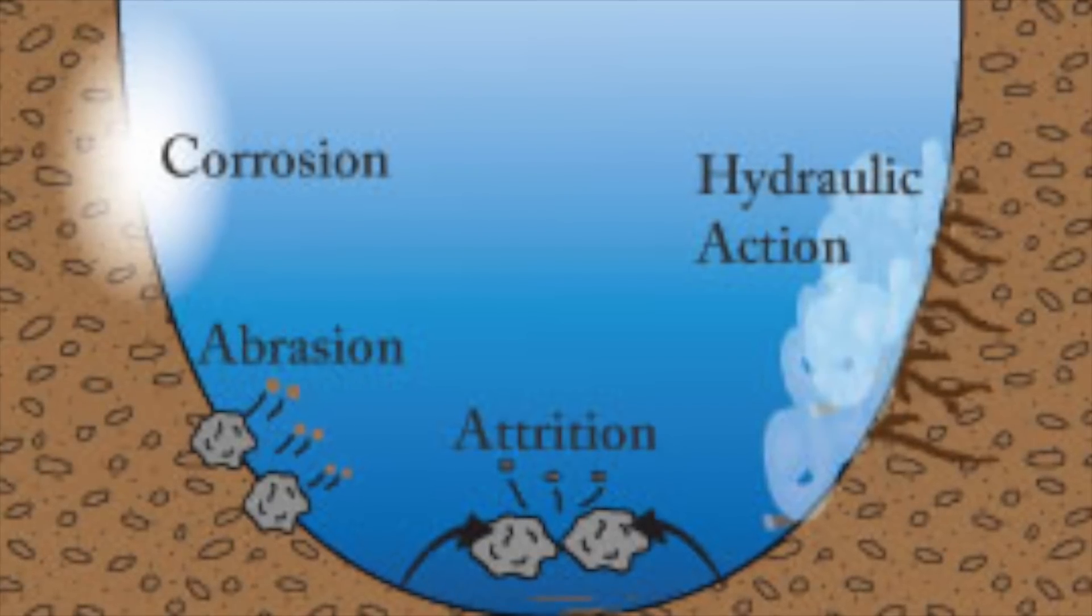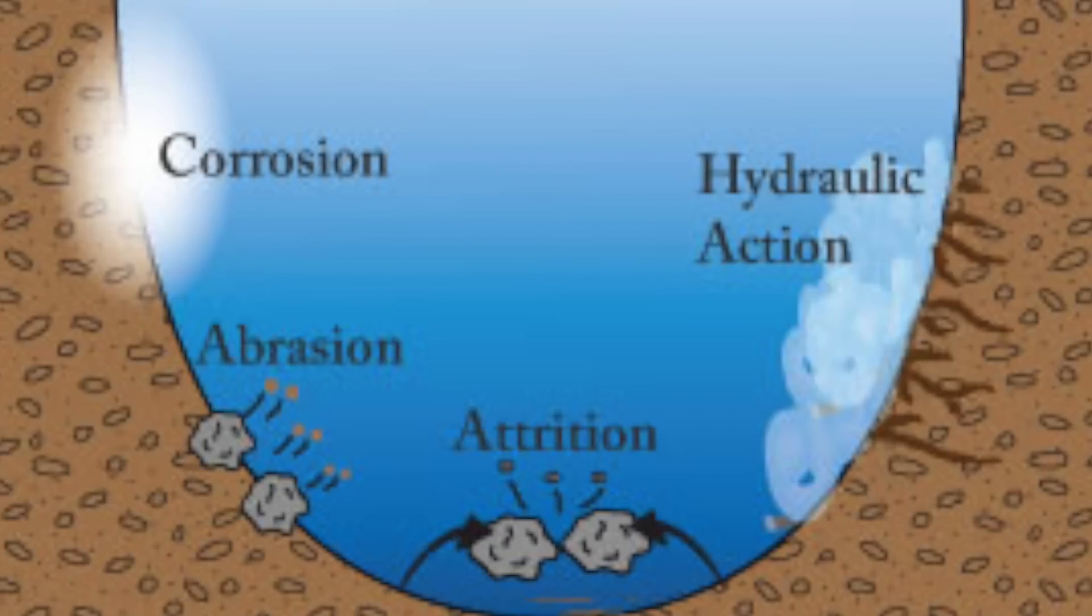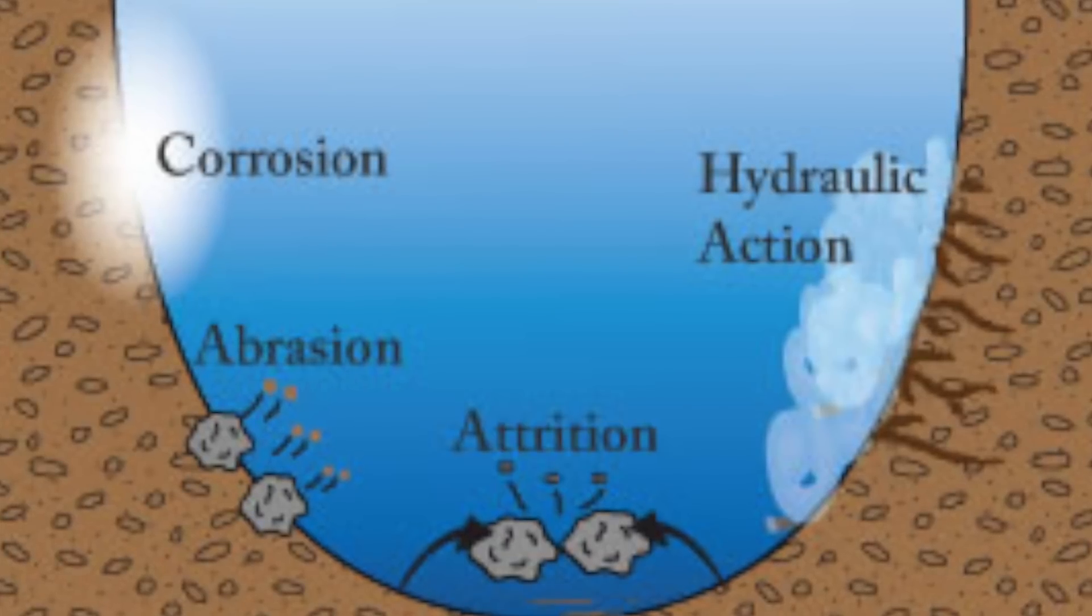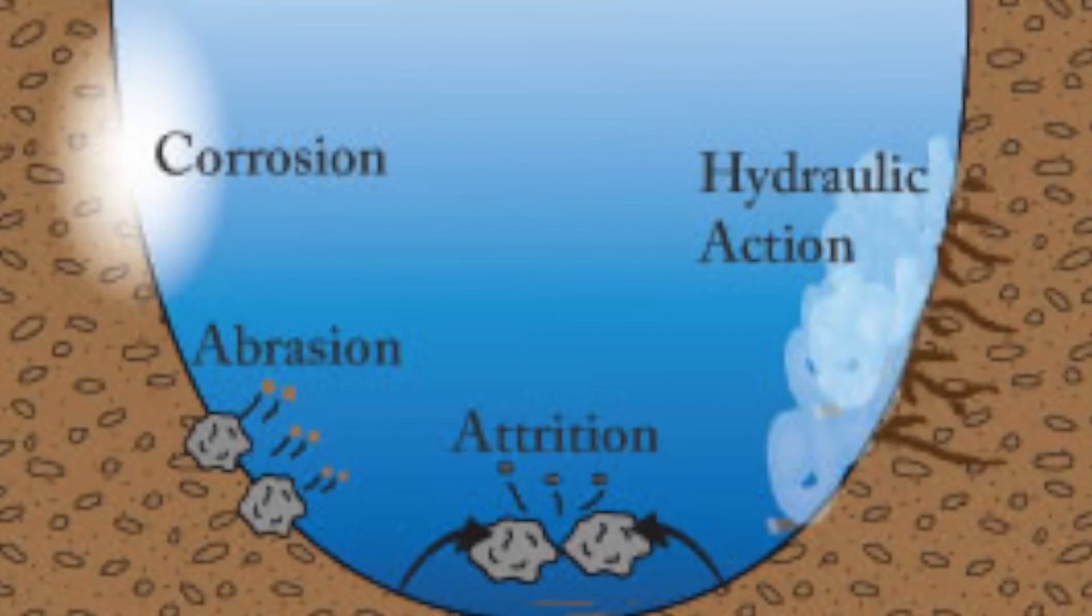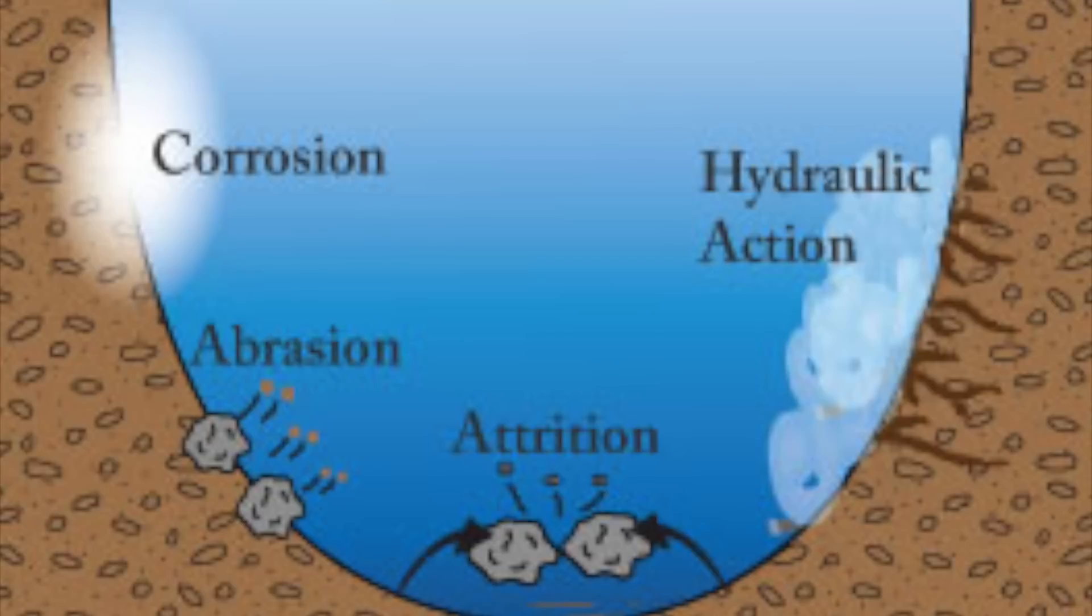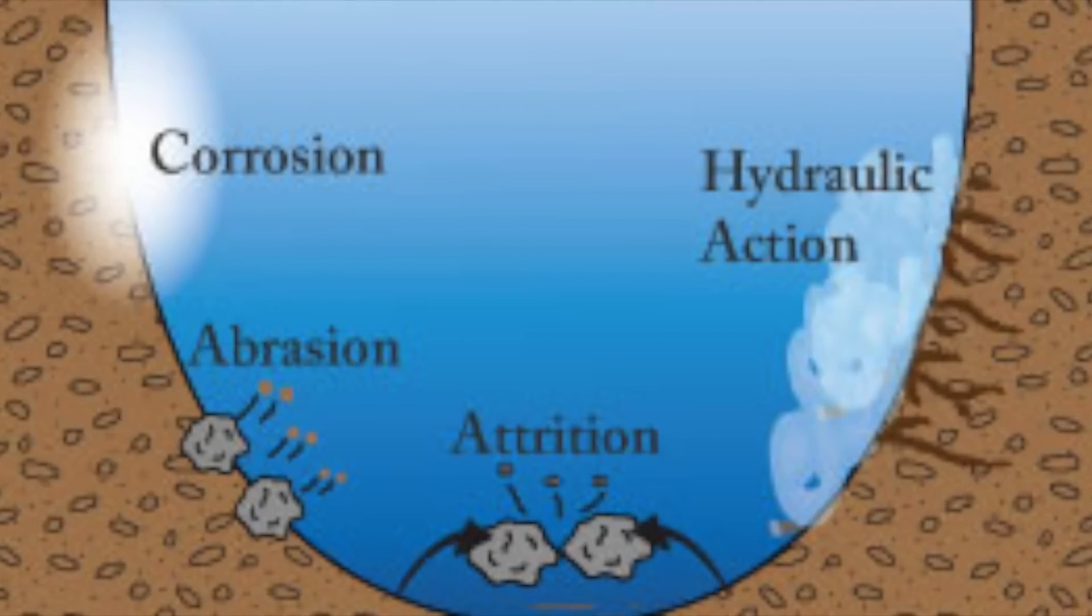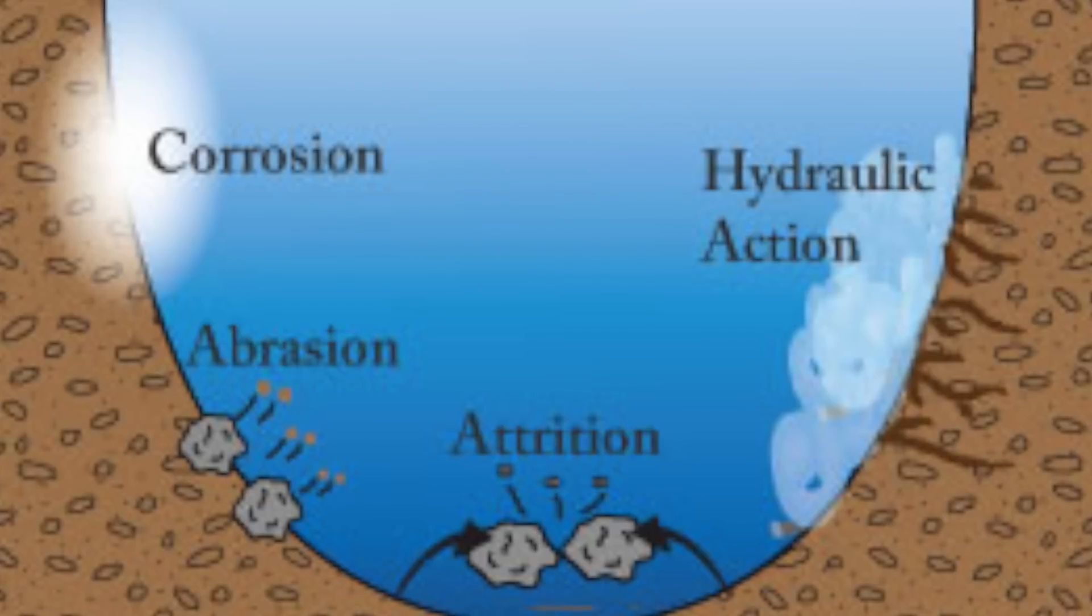Hydraulic action is the power of moving water being forced against river banks, causing them to collapse and be washed away. This is like the water crashing against the river banks and just wearing it away.